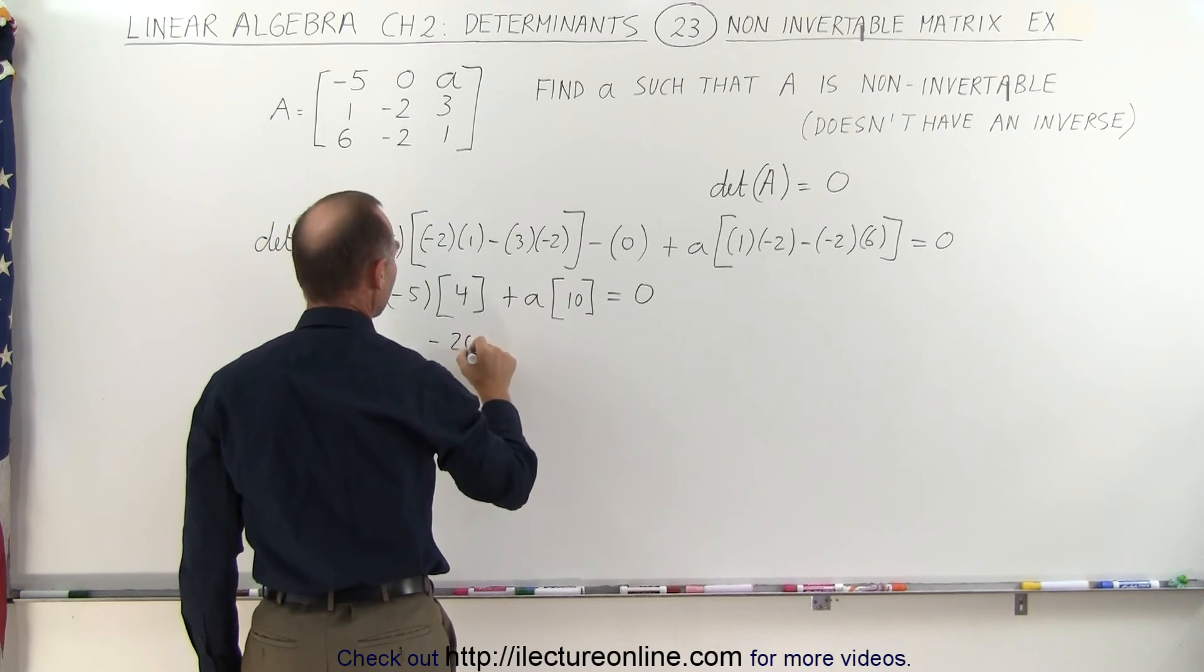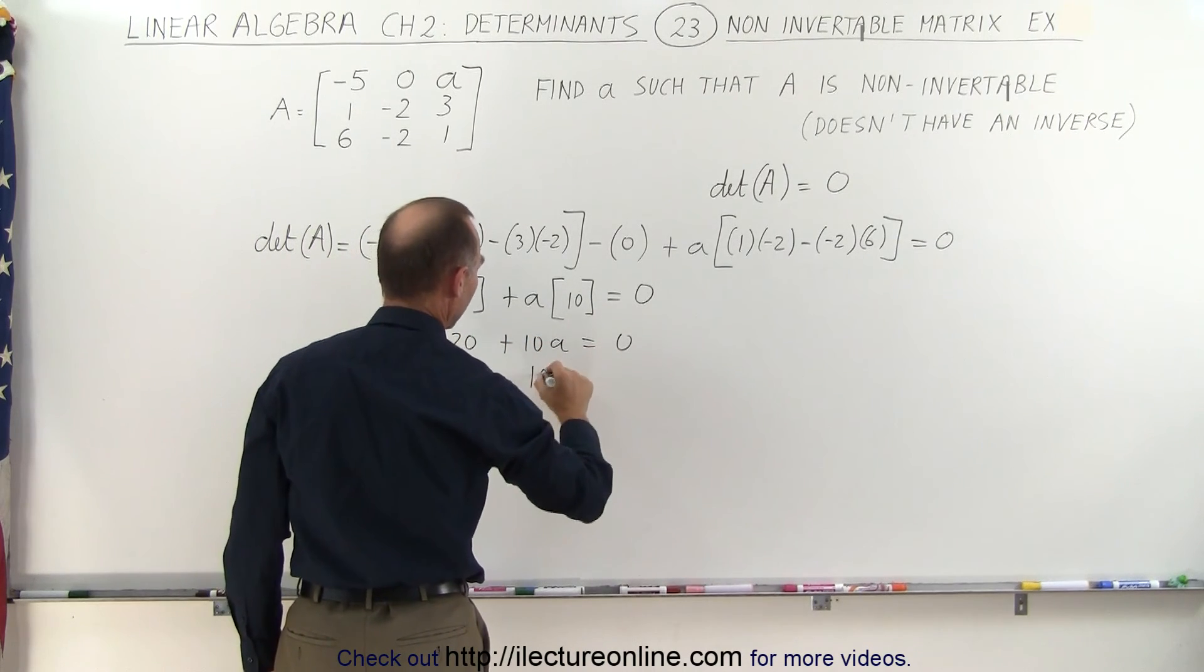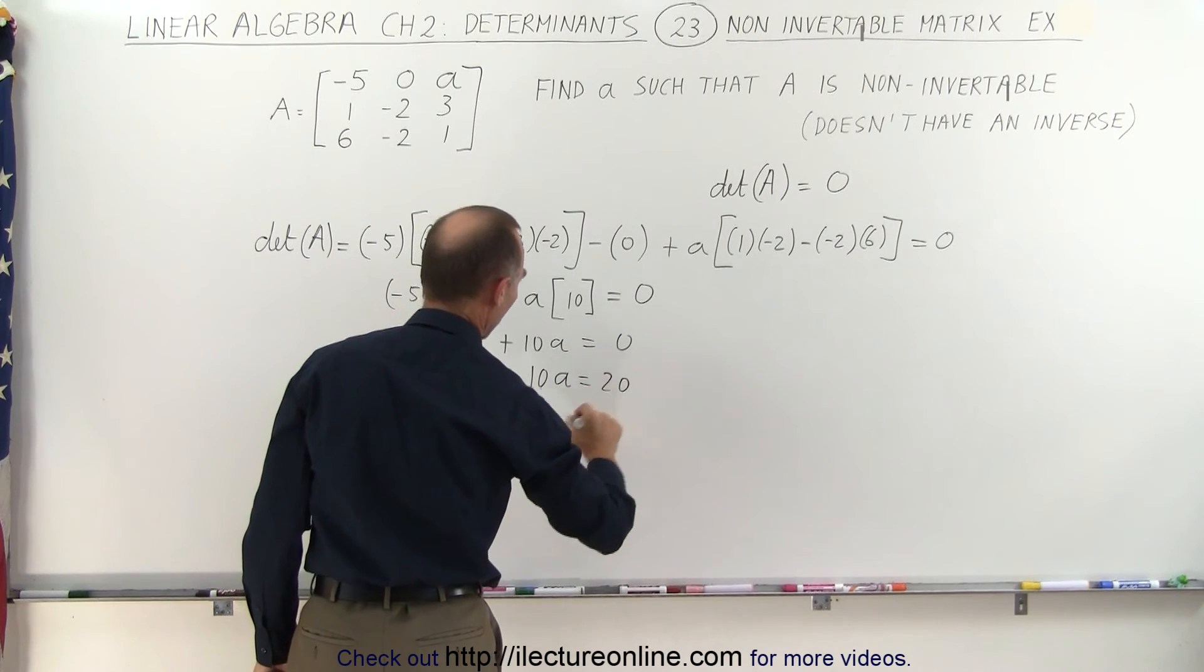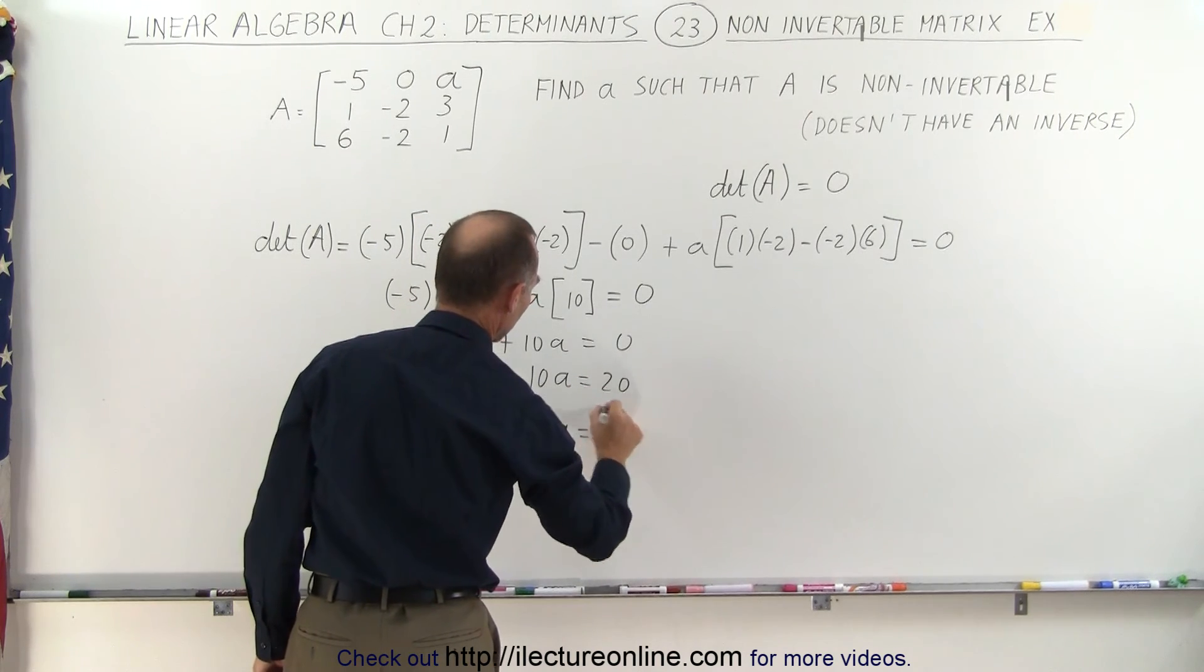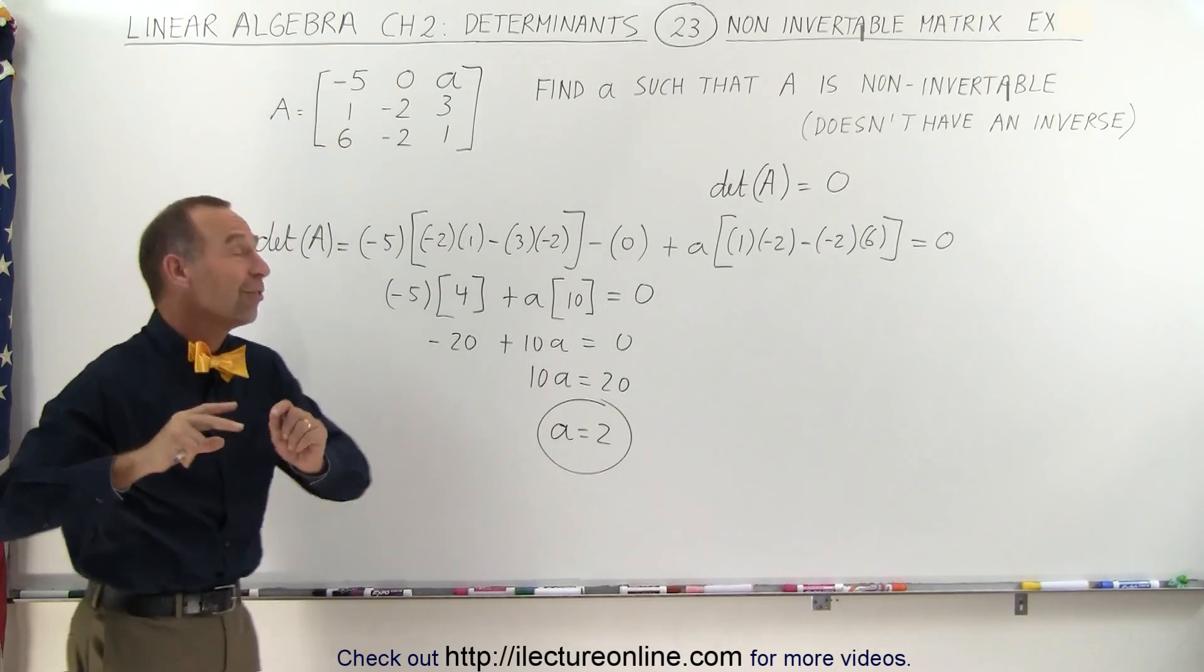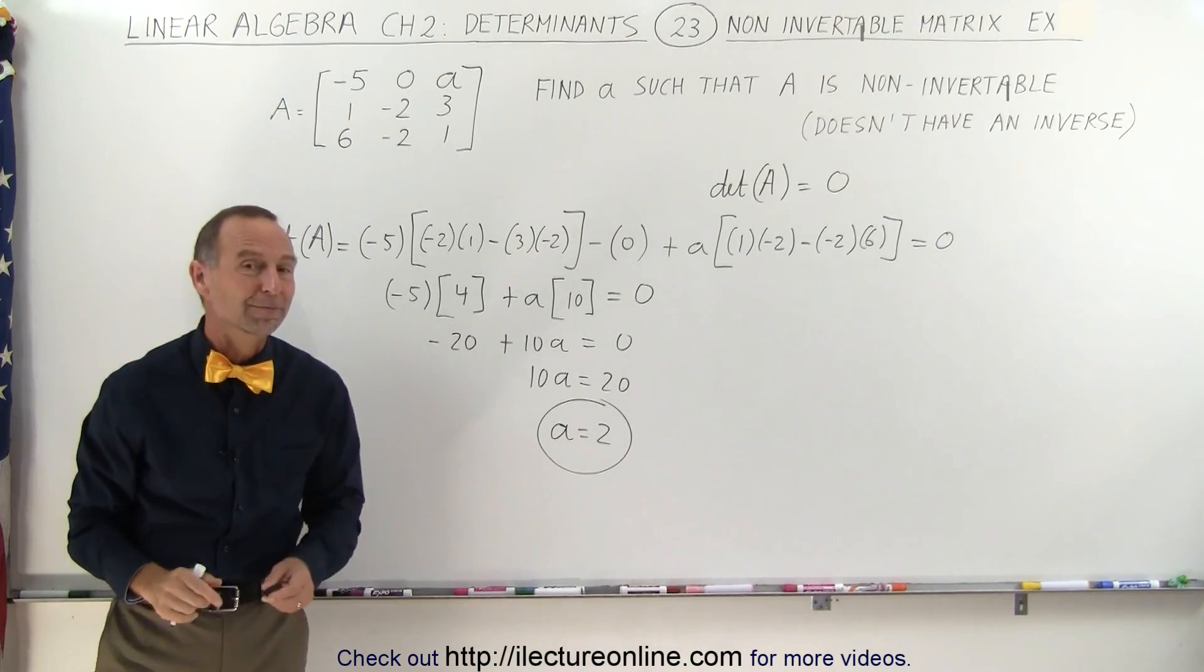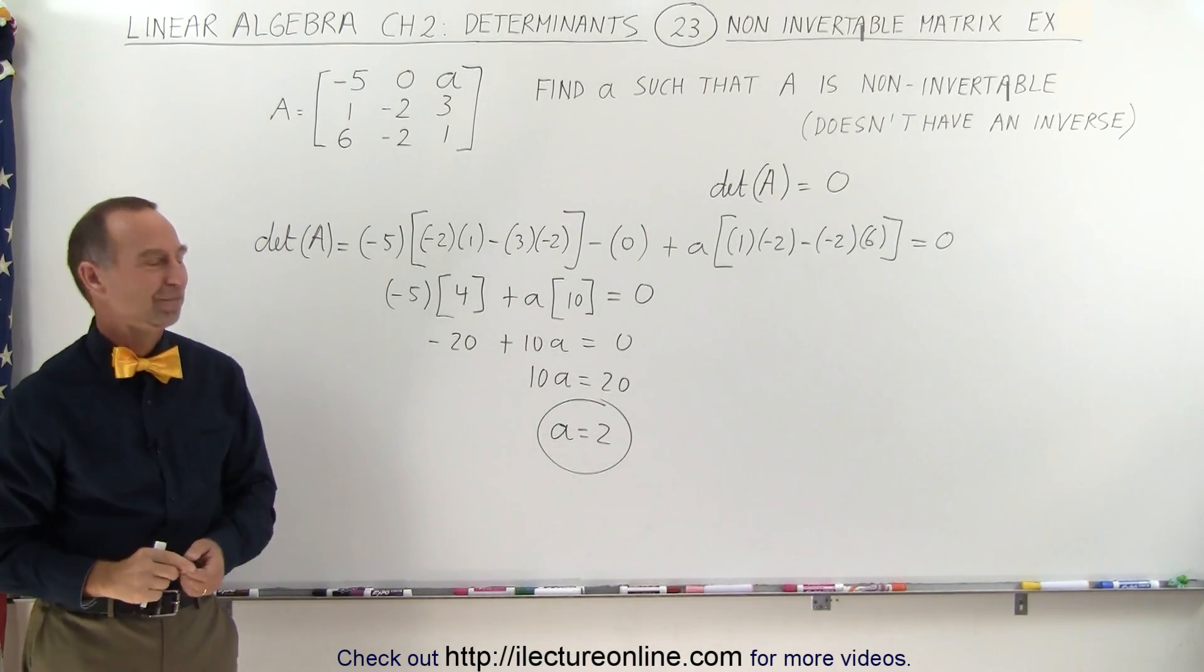We get minus 20 plus 10A equals 0, or 10A equals 20, or A equals 2. When A equals 2, we plug it in here and this matrix does not have an inverse because then the determinant will equal zero, and that's how it's done. Thank you.